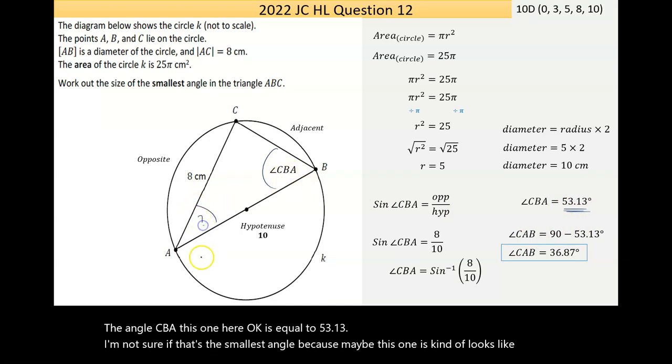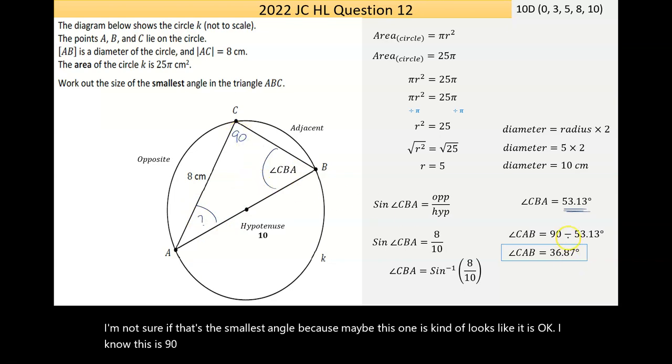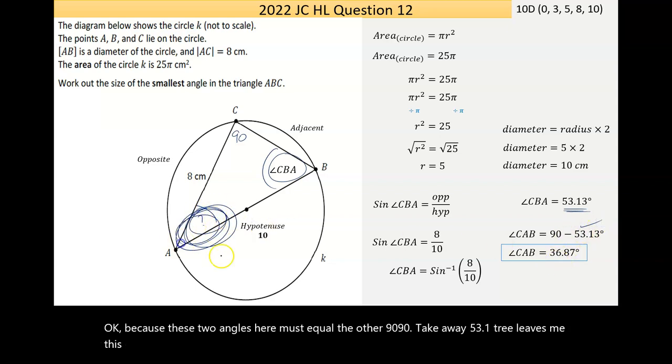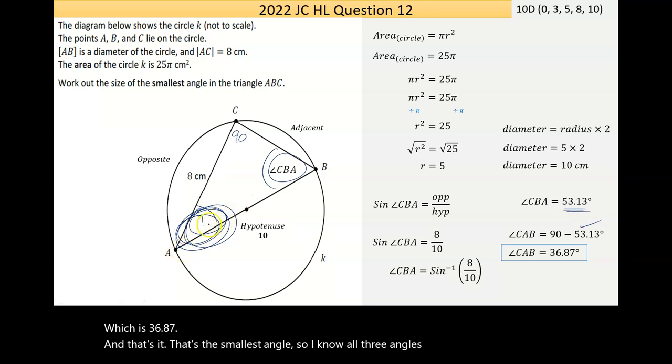Now, I'm not sure if that's the smallest angle, because maybe this one is. It kind of looks like it is. I know this is 90. So if I take 90, because these two angles here must equal the other 90, 90 take away 53.13 leaves me this angle here, which is 36.87. And that's it. That's the smallest angle. So I know all three angles. The smallest one is this one. That's the angle at CAB.